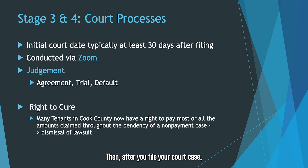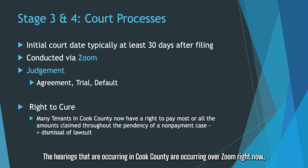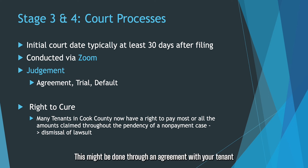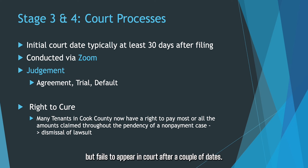After you file your court case, you'll get an initial court date, which usually occurs at least 30 days after the paperwork has been filed, so the eviction process does take a fair amount of time. The hearings in Cook County are occurring over Zoom right now, so you may be able to attend your court hearing remotely. After a number of court hearings, you may be able to get a judgment. This might be done through an agreement with your tenant, through the trial process, or through a default judgment — which usually occurs if the tenant has been served but fails to appear in court after a couple of dates.